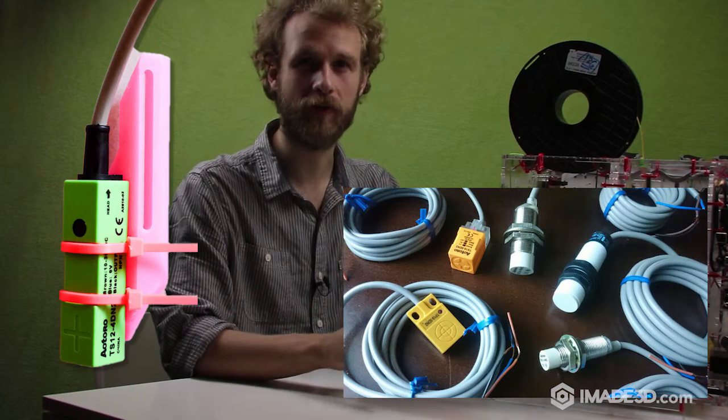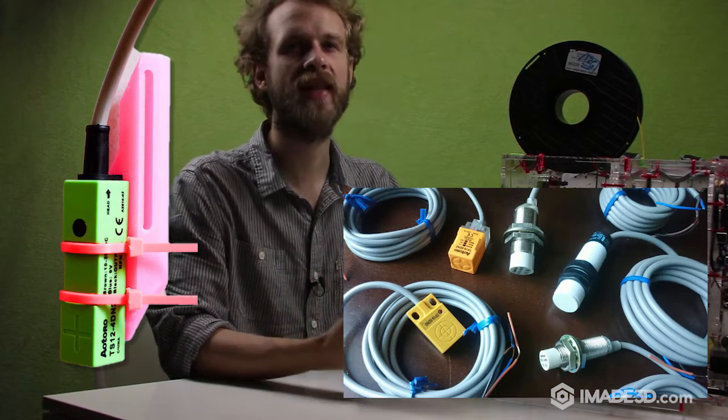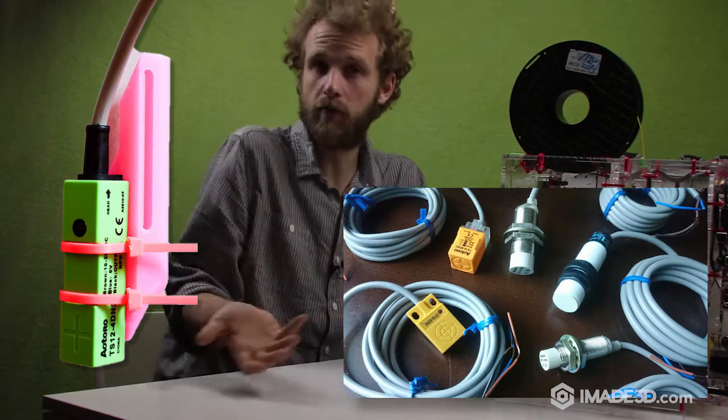Jellybox uses an inductive proximity sensor to figure out at what height to start printing. Proximity sensors are sensors able to detect the presence of objects without any physical contact, based on mere proximity.